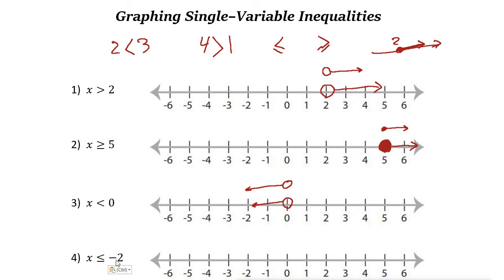Last example: x is less than or equal to negative 2. Negative 2 is here on the number line. Since the sign is less than or equal to, x could be negative 2 — and anything less, like negative 3, negative 4, and so on. So we place a filled circle on negative 2 and draw the arrow toward the left.